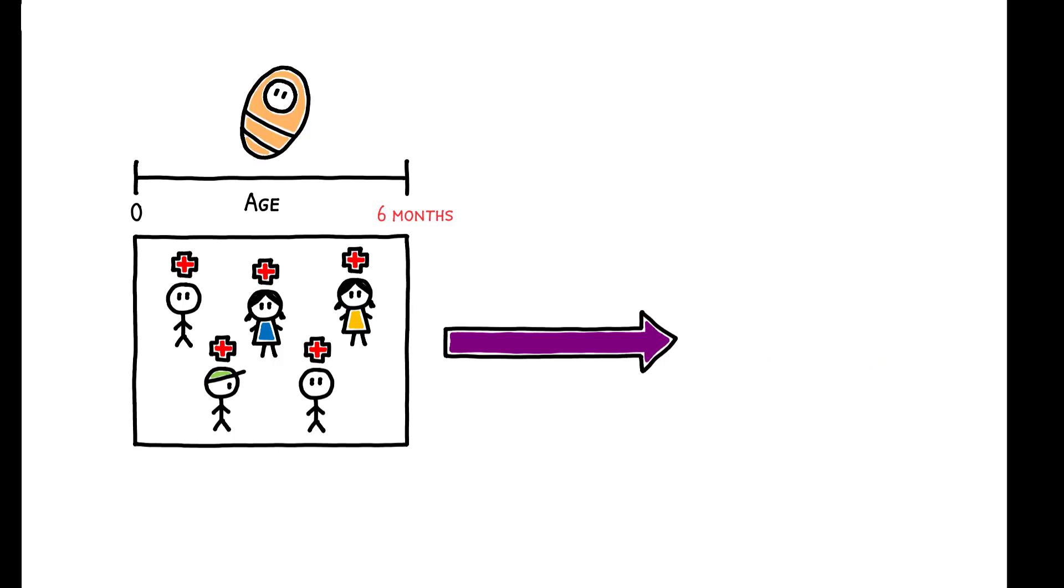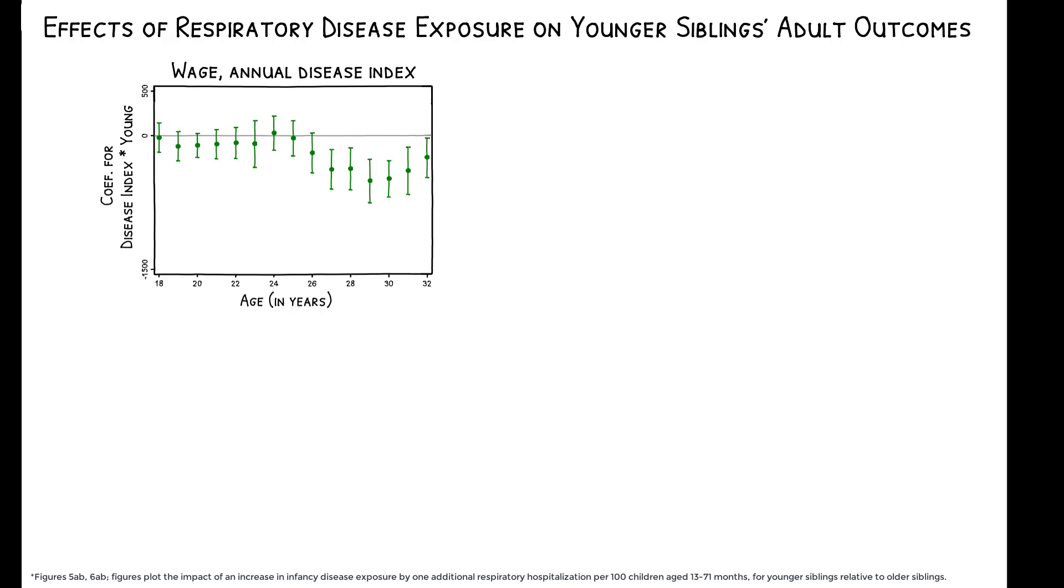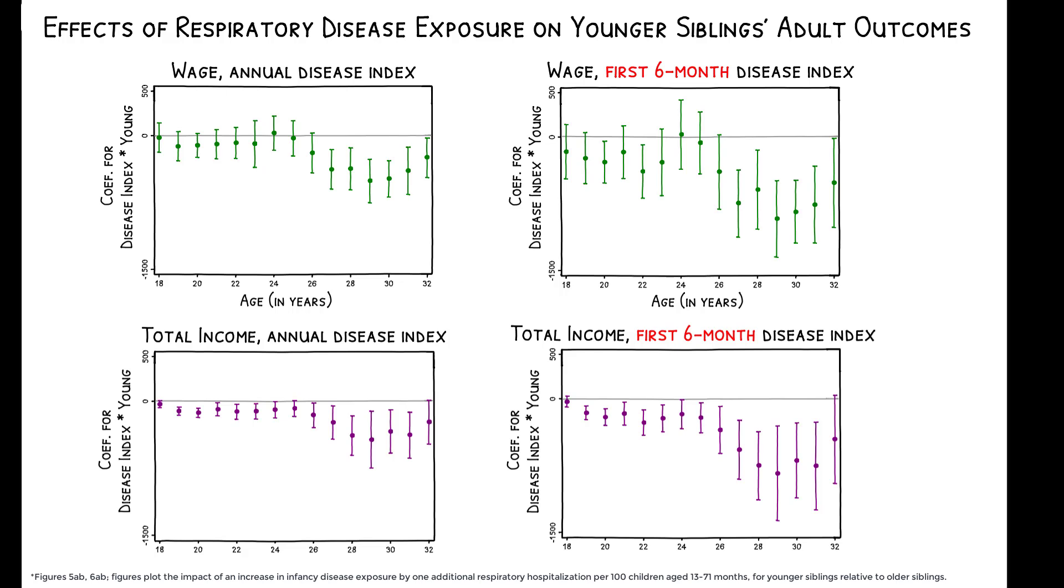Crucially, this early exposure has long-term consequences. For younger siblings, an interquartile increase in respiratory disease exposure during the first year of life leads to a 0.8 percent reduction in wages and income at ages 25 to 32, and a 0.3 percentage point reduction in the income percentile rank. These effects are again larger when disease exposure is measured over the first six months of life.